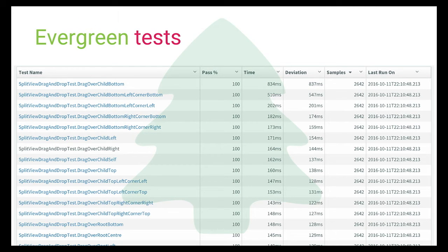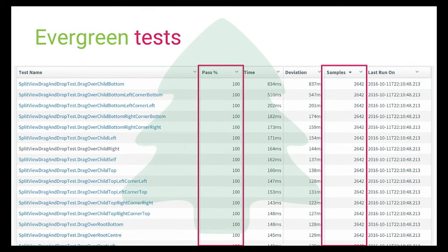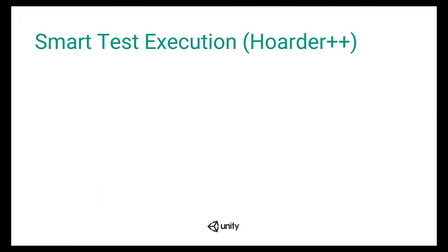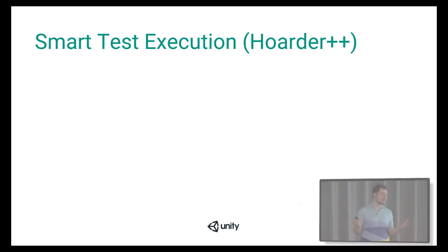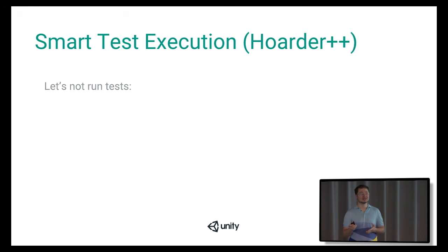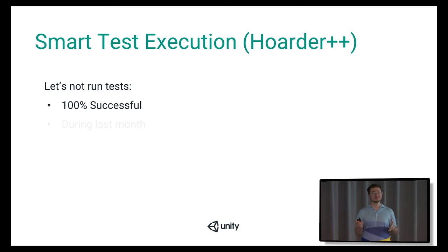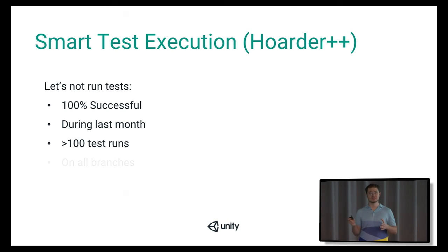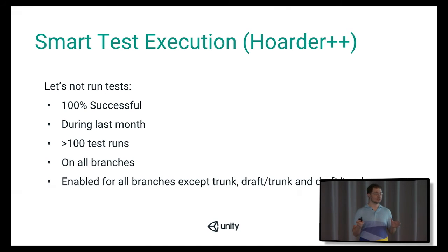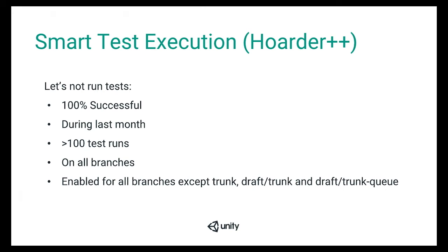Once we had that data, we found out that we have evergreen tests. You can see that some tests have 100% success rate even though they have thousands of executions. We came up with a pretty simple but yet powerful idea: let's just not run tests. How dangerously that could sound — but the idea is: let's not run tests which are 100% successful during the last month and which have more than 100 test runs, and on all branches except those involved in merging into the mainline trunk. That's a key point — we do not just get rid of all tests. We get rid of green tests, and if they fail during the merge process, we will know and put them back on probation, running them for another month.